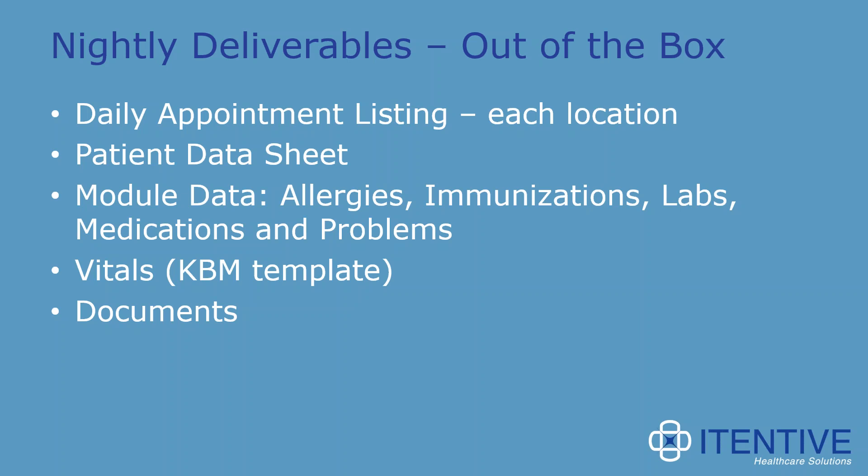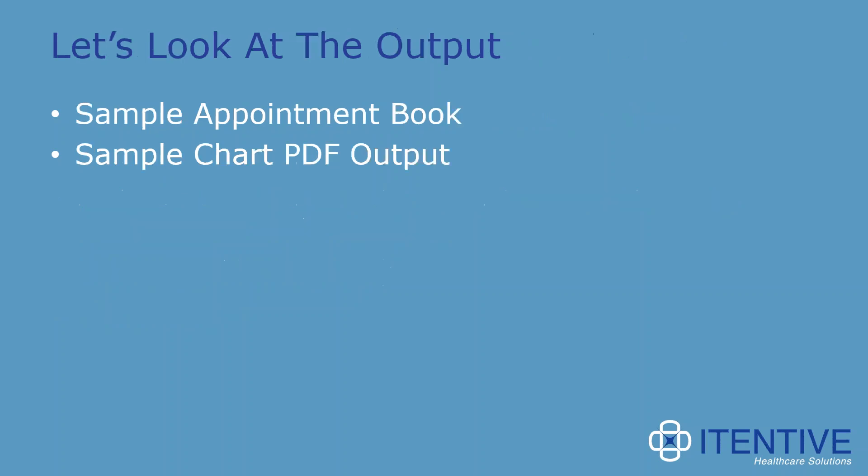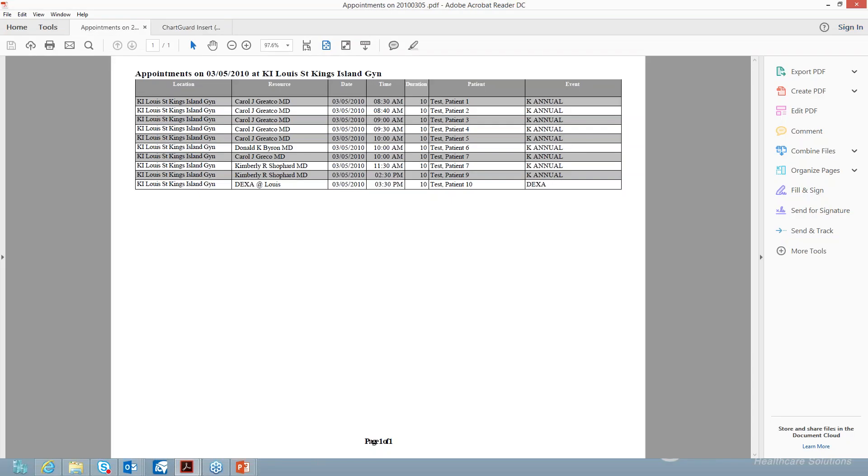A common question is: if the patient has been with us for 10 years, will we get a 500-page chart? No. During install, we set what we call the depth of the information — how many months back or how many items back, and which types of documents you want. So we build what you need for that downtime situation without ending up with reams of data. The great thing about these charts is that they're human readable — they can be used electronically or put to paper.